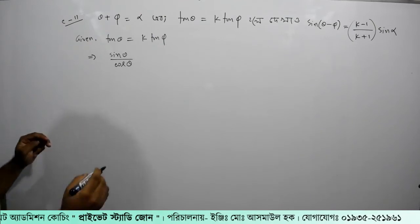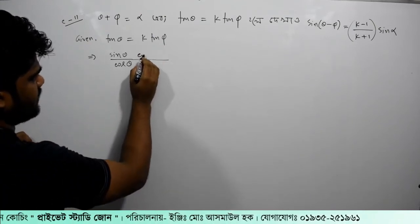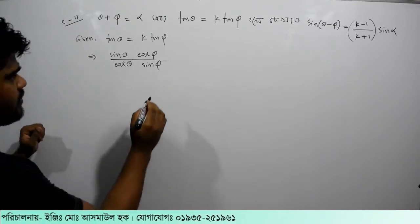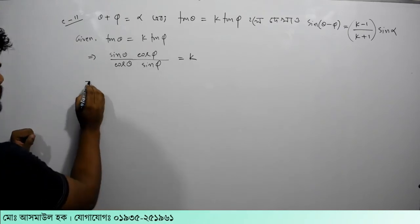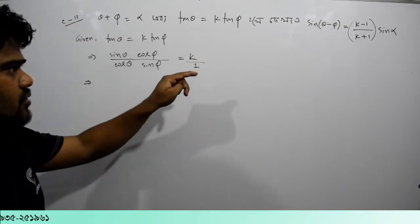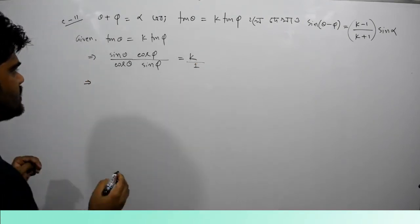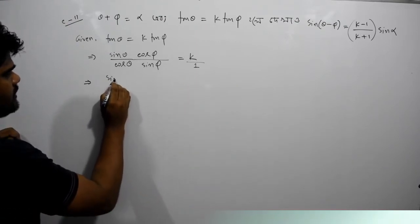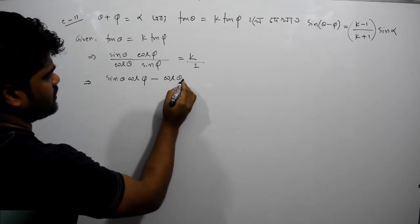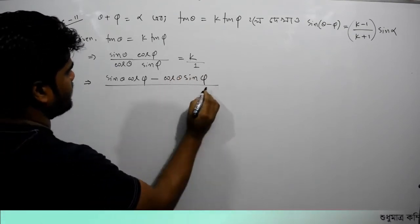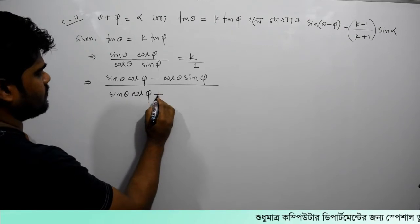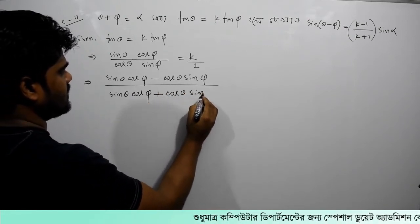We can see that cos phi, sin phi. We will see that k, then k minus 1. Going to see k minus 1 and k plus 1, we start to see sin theta cos phi minus cos theta sin phi.